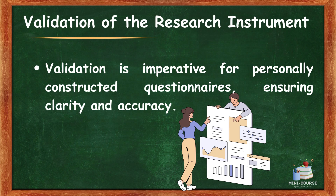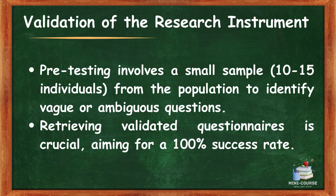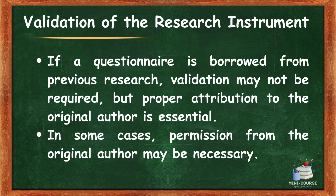Validation is imperative for personally constructed questionnaires, ensuring clarity and accuracy. Pre-testing involves a small sample of 10–15 individuals from the population to identify vague or ambiguous questions, aiming for a 100% retrieval success rate. If a questionnaire is borrowed from previous research, validation may not be required, but proper attribution to the original author is essential. In some cases, permission from the original author may be necessary.